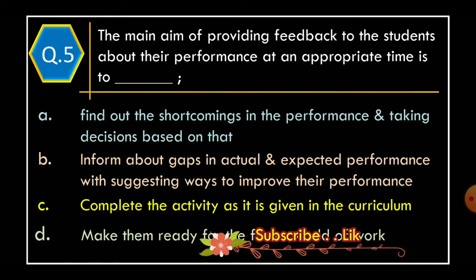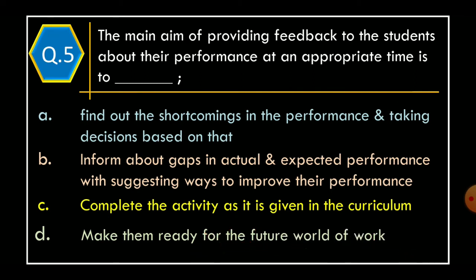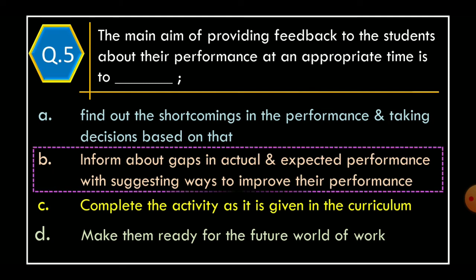Question 5. The main aim of providing feedback to the students about their performance at the appropriate time is to: Option A. Find out the shortcomings in the performance and taking decisions based on that. Option B. Inform about gaps in actual and expected performance with suggesting ways to improve their performance. Option C. Complete the activity as it is given in the curriculum. Option D. Make them ready for the future world of work. The correct option is Option B: Inform about gaps in actual and expected performance with suggesting ways to improve their performance.